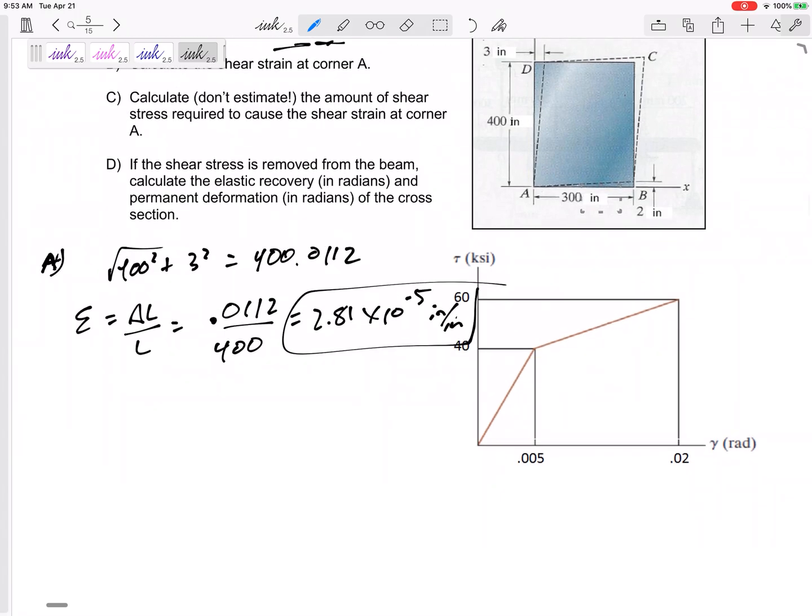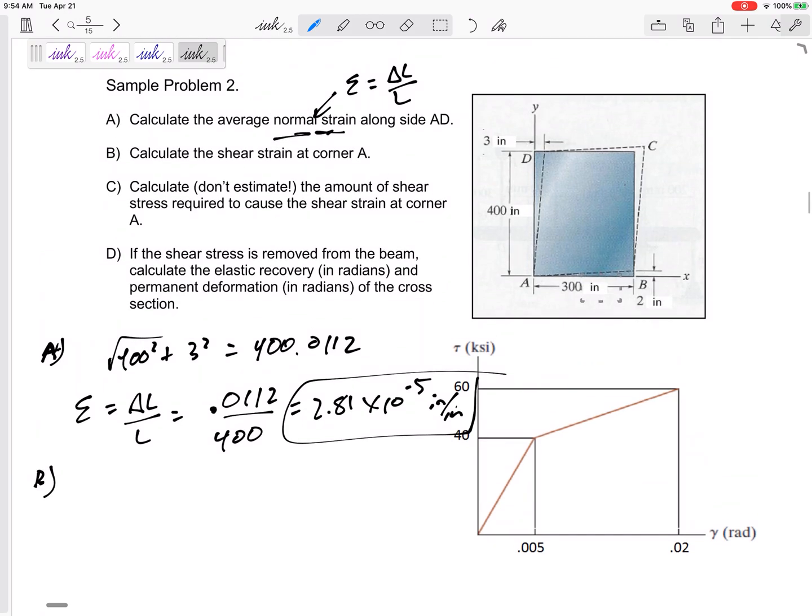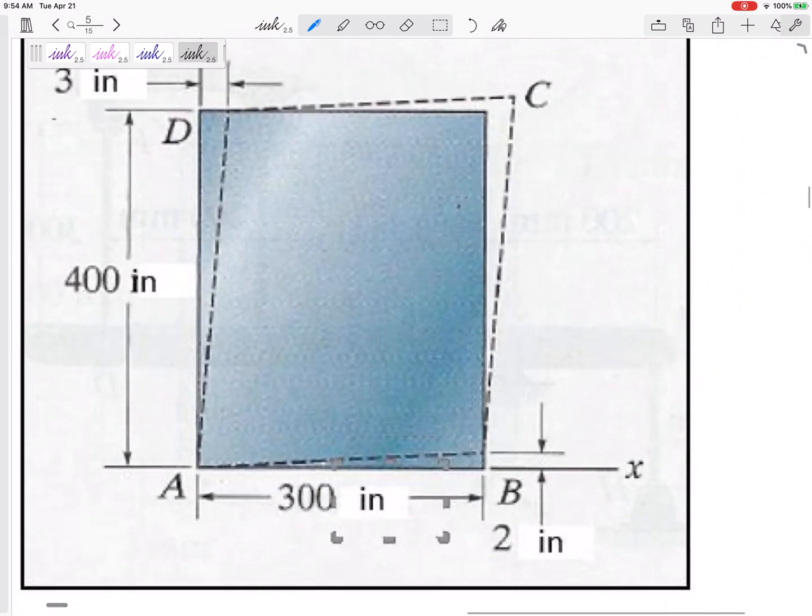All right, so normal strain is Delta L over L. All right, B, the shear strain at corner A. So the shear strain at corner A, remember at corner A, think, look, all different corners have different positives and negatives. But for corner A, a positive would be a decreasing in angle. So yes, this is positive. So I need to add up that angle and that angle. All right, let's maybe zoom in here. Let me add up that angle and that angle.